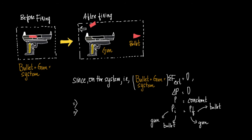Before firing we have a gun and a bullet; after firing the bullet leaves the gun, but we still consider this to be one complete system. Since bullet and gun are the system, the net external force acting on this system is zero. Why? Because the bullet is moving due to the chemical reaction taking place inside, providing energy from that reaction.